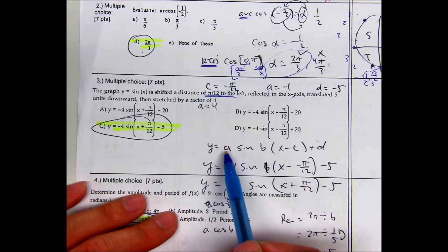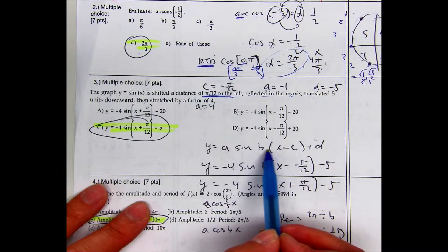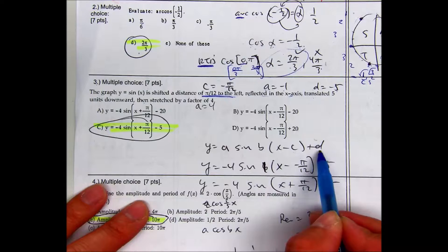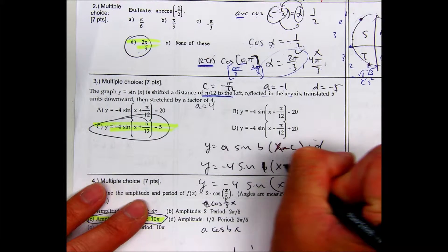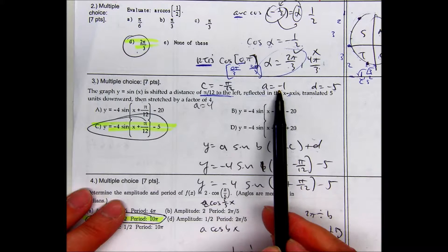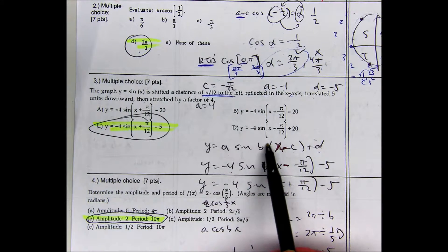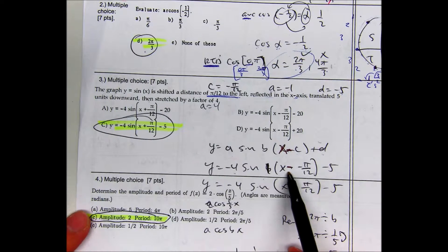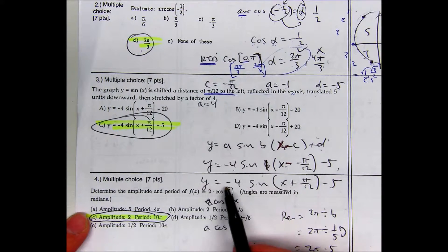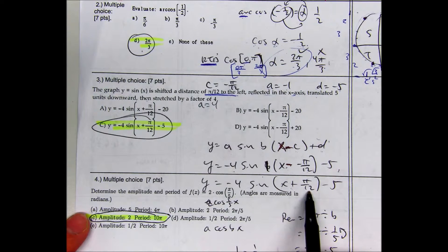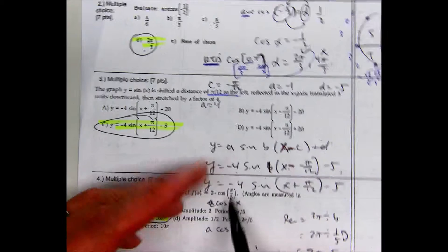Writing the transformation formula: a is in front, b is after your trig function before the parentheses, c is inside, and d is at the end. The formula must have a minus sign. Substituting in: a = -1 times 4 = -4, b = 1 (no period change mentioned), the minus sign is required, c = -π/12, and d = -5. The opposite of negative is positive, so y = -4 sin(x + π/12) - 5, which is choice C.